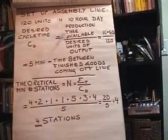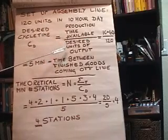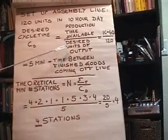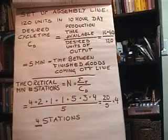So the time that we have available in a 10-hour day is 10 times 60 minutes in an hour, so we've got 600 minutes divided by 120 gives you five minutes.